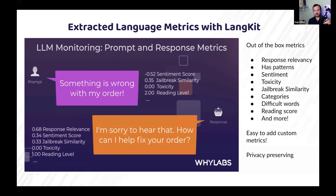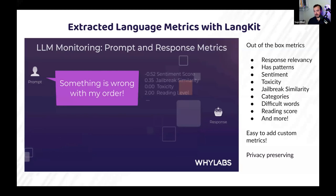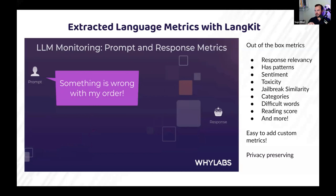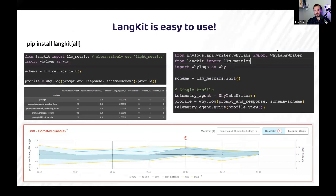These metrics get extracted in your own environment. You can do whatever you want with them — send them to some sort of observability store to monitor over time. It's really easy to use: just pip install it in your Python environment, and it's just a few lines of code to create a profile.